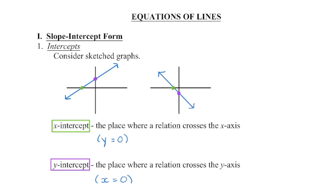In grade 10 we focus on linear relations where we know the graph is going to produce a straight line. There are three different ways that we can write the equation of those linear relations and we're going to take a look at the first one today, which is what we call slope-intercept form.